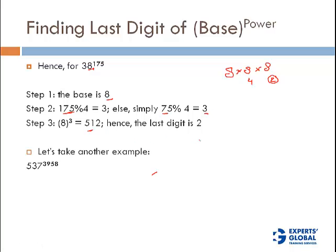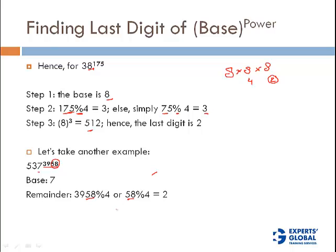Let's take one more example: 537 raised to the power 3958. Step 1: the base digit is 7. Step 2: find the remainder of the power divided by 4 — remainder of 3958, or simply the last two digits 58 divided by 4, gives a remainder of 2. Therefore my answer is the last digit of 7 raised to the power 2, which is 49, so the last digit is 9.